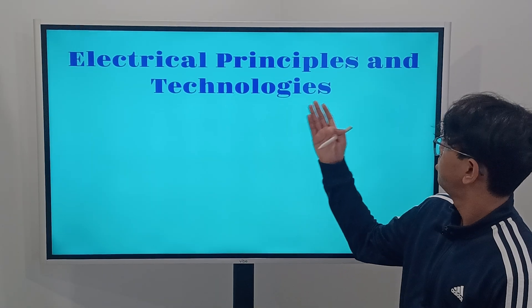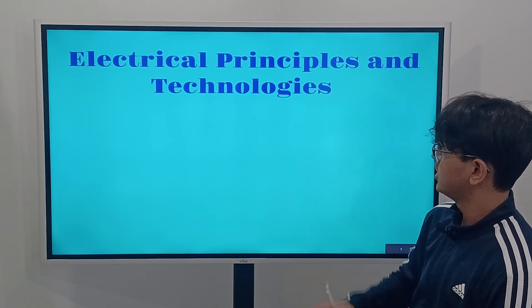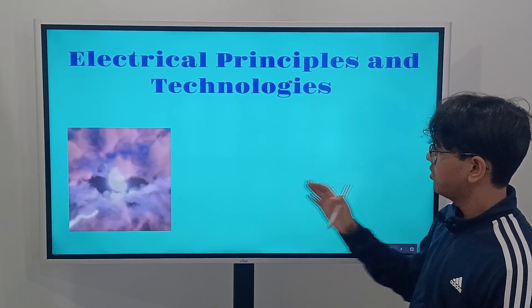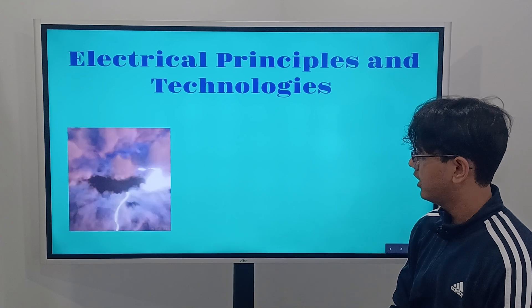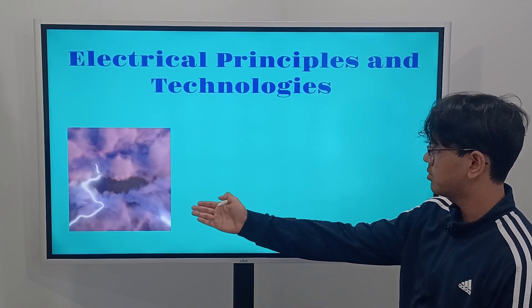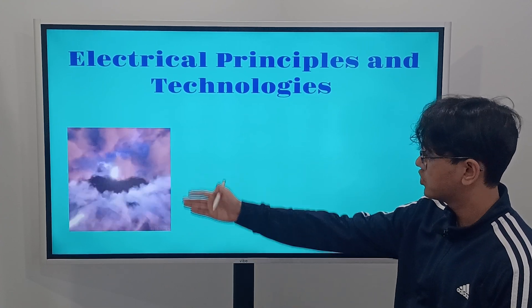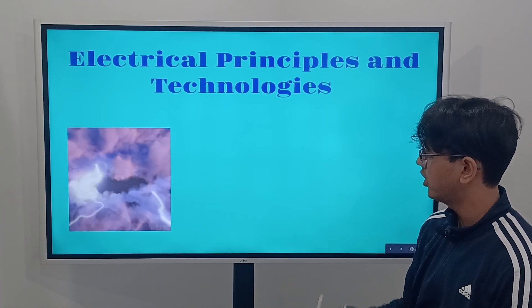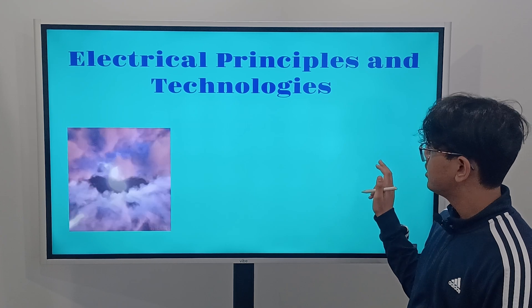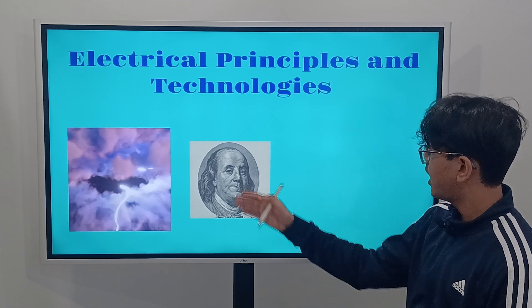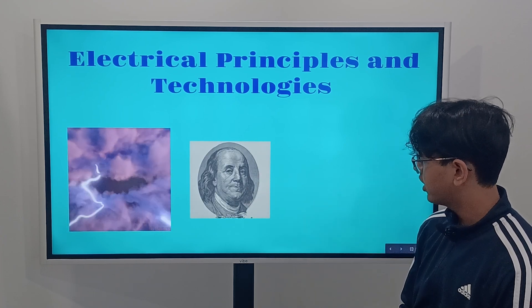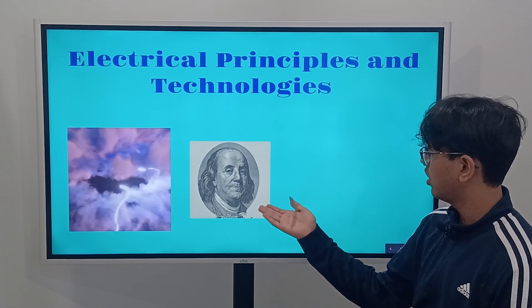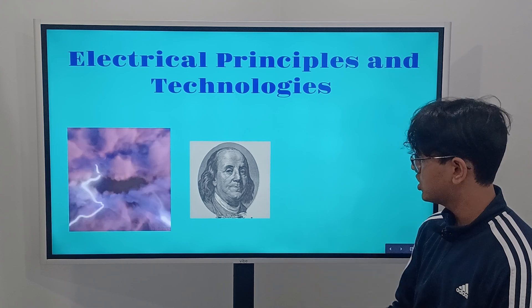We're going to be going over electrical principles and technologies. So we have lightning here — lightning is basically a bunch of electrical charges that occur. And this is Benjamin Franklin, who was the one that gave the theory about laws of charges.